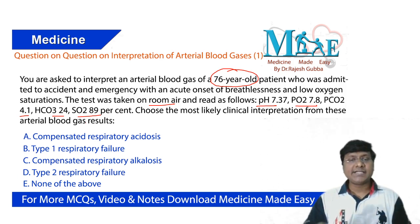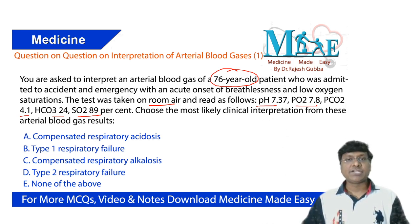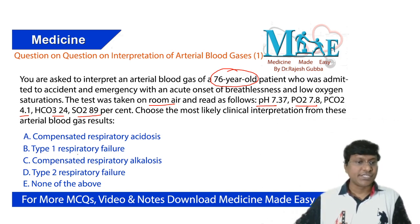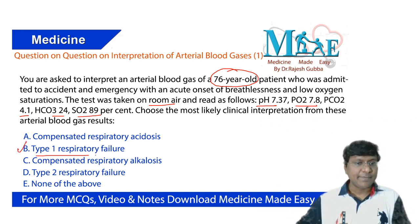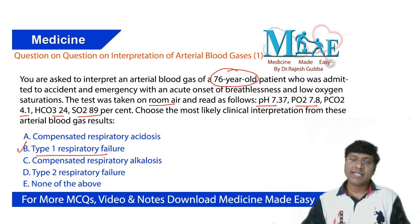You should understand some basic terminology first — what is normal pH, normal partial pressure of oxygen, normal partial pressure of carbon dioxide, and normal bicarbonate levels. Let me first give you the answer and then discuss all options. The answer to this question is type 1 respiratory failure.